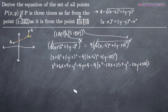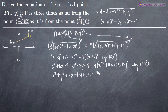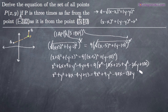Now we can combine things on the left-hand side and multiply the nine through the right-hand side. On the left, we'll have x squared plus y squared plus six x minus four y plus thirteen. On the right, distributing the nine, we get nine x squared plus nine y squared minus ninety x minus one hundred and eighty y, and then plus one hundred and twenty-five times nine, which is one thousand one hundred and twenty-five.